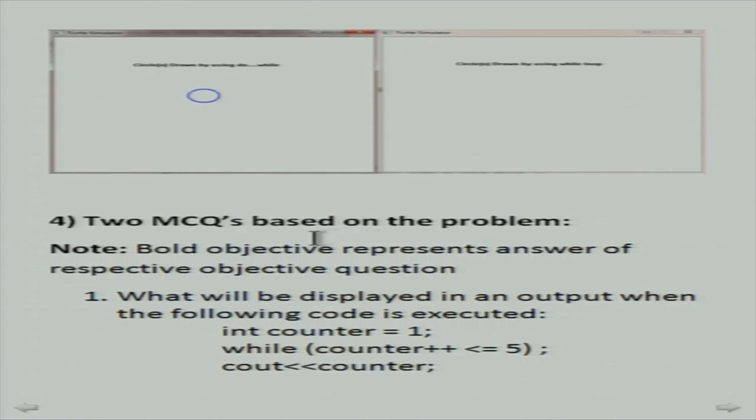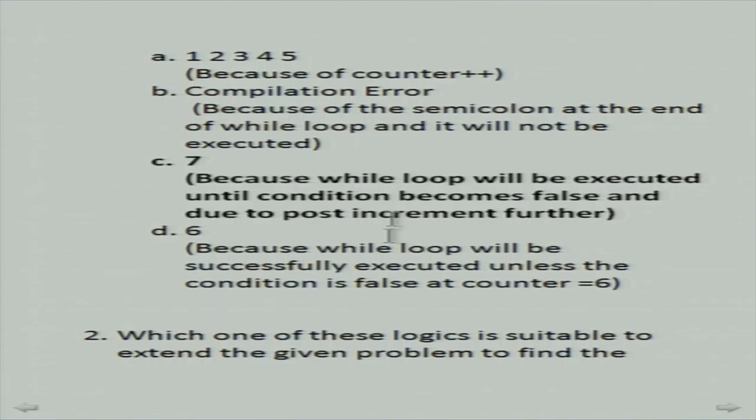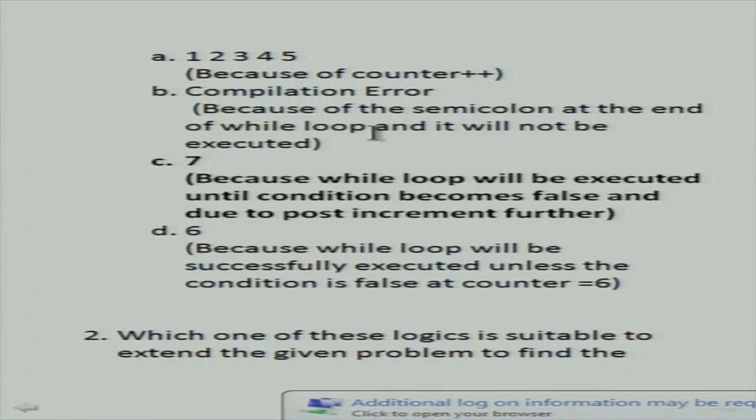Out of 14 MCQ questions, two best questions were selected. First question: what will be displayed when the following code executes? It's a while-based problem — counter = 1, while counter++ <= 5. The correct answer is 7. Option A (1,2,3,5) is wrong because of counter++. Compilation error is wrong — the semicolon at end of while doesn't cause compilation error but may confuse students. 7 is correct because the loop continues until the condition is false, so counter reaches 6, and 7 is the last printed value.